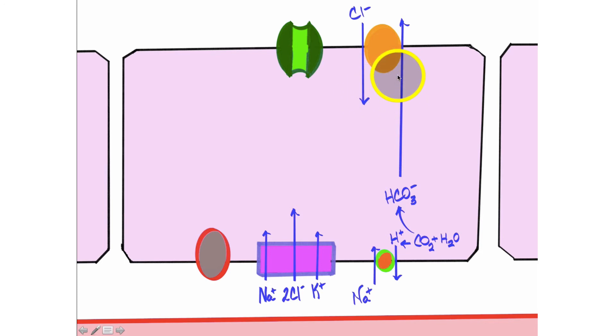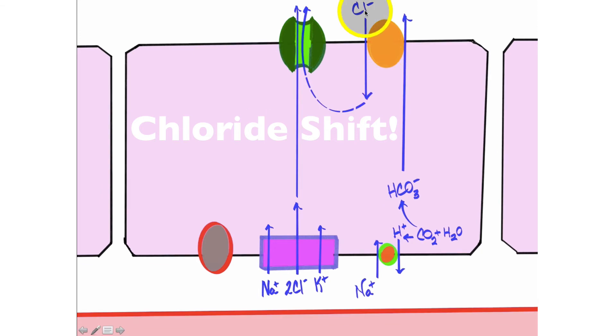Chloride comes in. This is, once again, the chloride shift. From here, that chloride proceeds to move back out into the lumen of the duodenum, as does this chloride that came in via the NKCC. So this chloride moves out. So we now have a bunch of anions moving into the lumen of the duodenum.